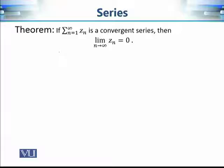This criterion says that if we are given a convergent series, then the limit of its terms is going to be equal to 0. In other words, as we increase the values of n, the terms of the sequence get closer and closer to the origin, and when n approaches infinity, zₙ is going to equal 0.